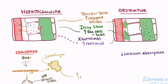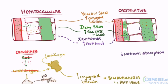Conjugated bilirubin excretion will often be increased in the urine, since it's being excreted from the blood through the kidneys. This is also called bilirubinuria, and will cause darker urine.